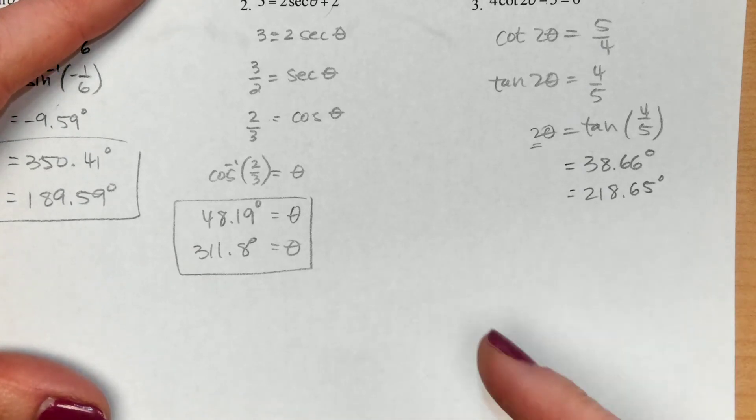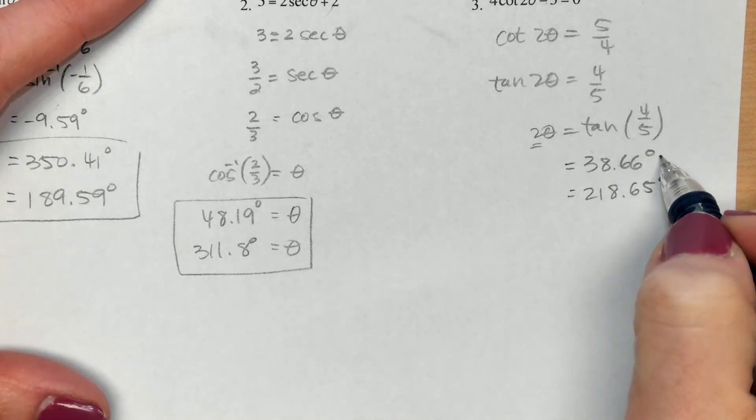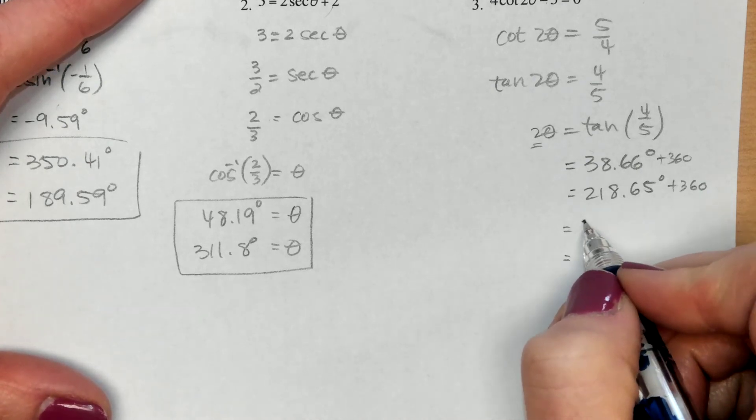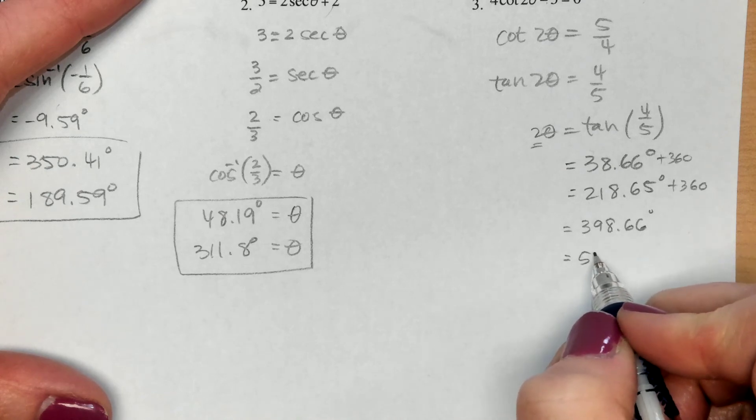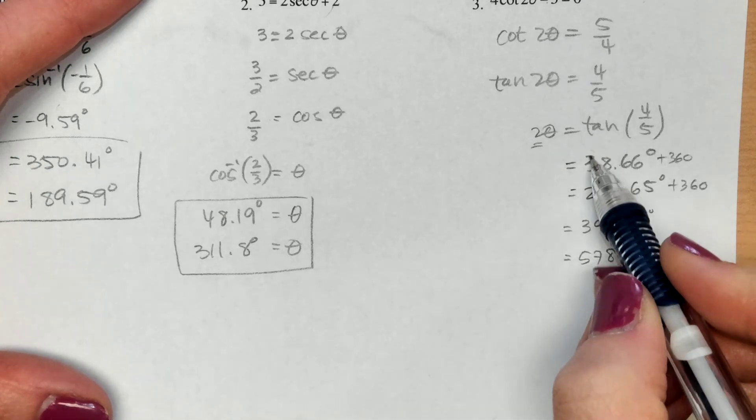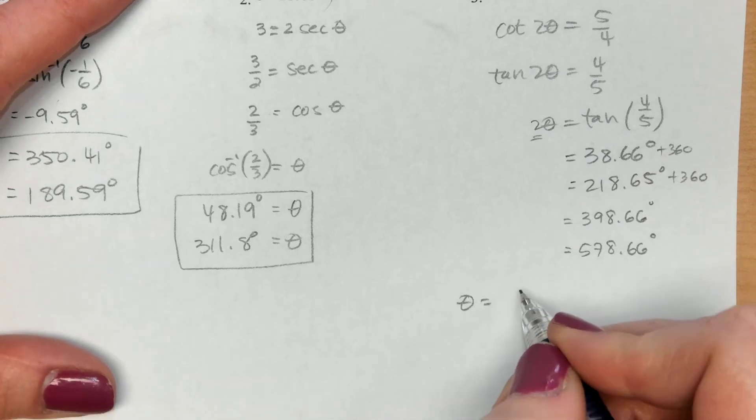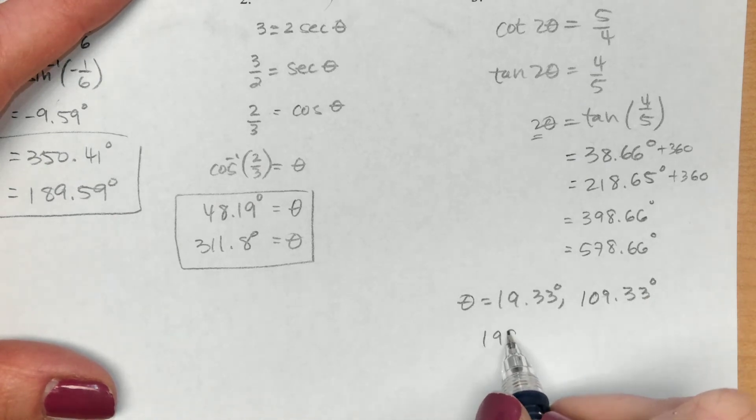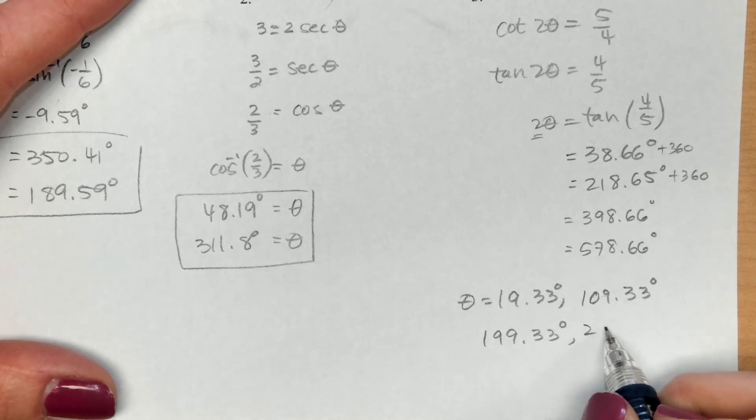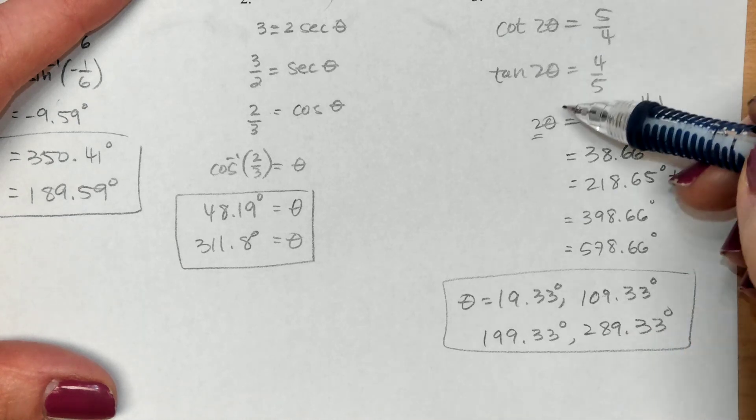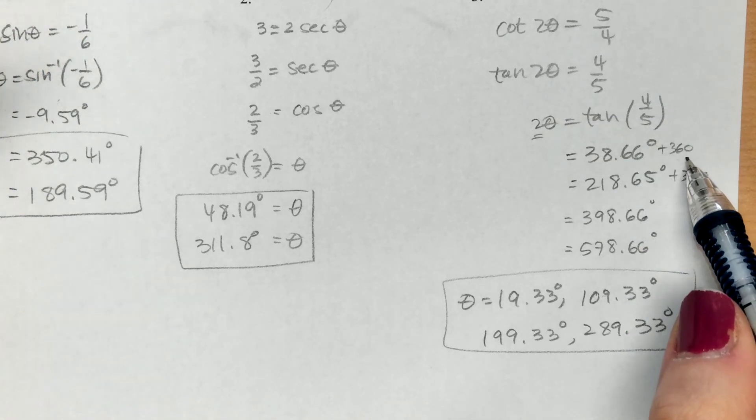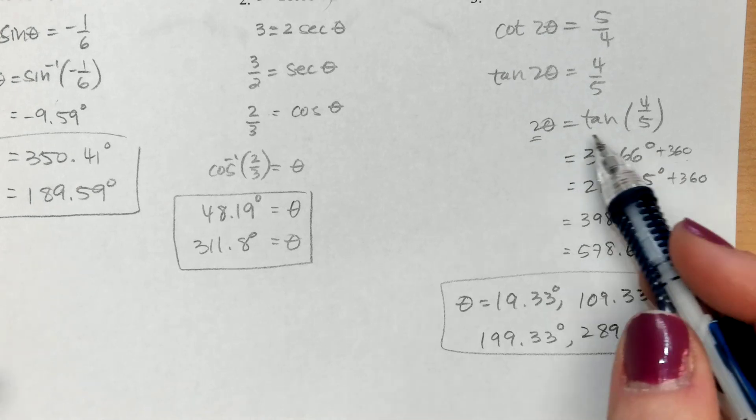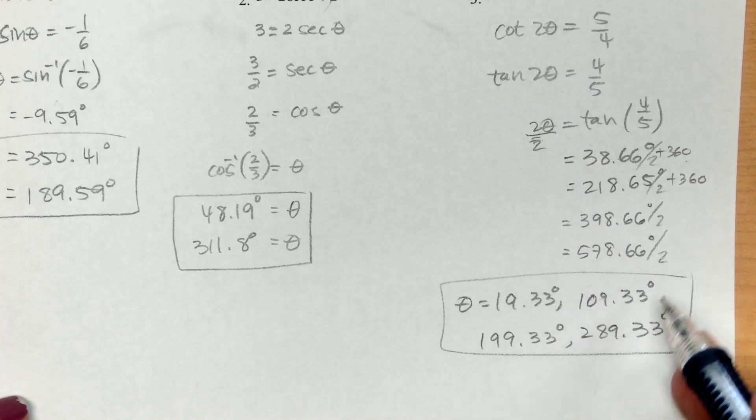Hopefully you notice that we also have this complication of having a 2 in front. So just like above, we're going to have to do another loop around the circle. We've got these two, but then we'll add 360 and add 360 and get our third and fourth answers, which will be 398.6 and 578.6. Now take all of these and divide by 2. So in the end, my answers are 19.3, 109.3, 199.3, and 289.3. Since we added 2, we needed to go one more time around the unit circle. We had to find all these extra values. So we were adding 360 to loop around the circle. And then once we had them all, that's when we divided by 2.